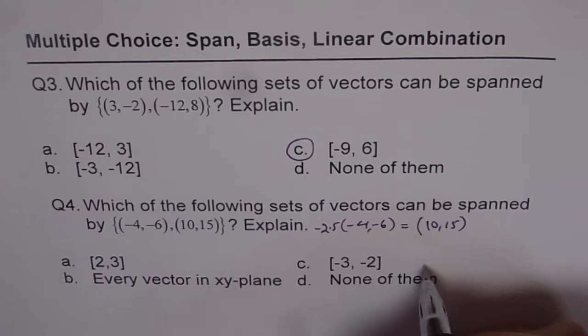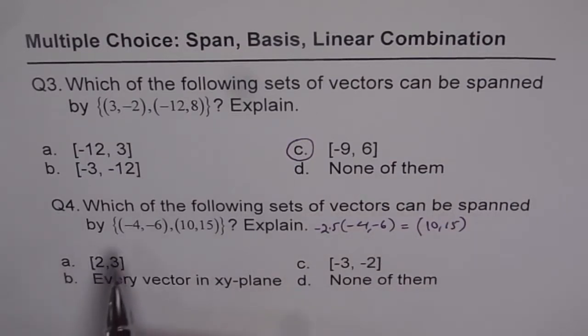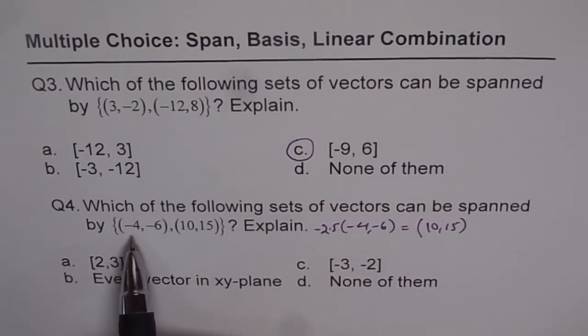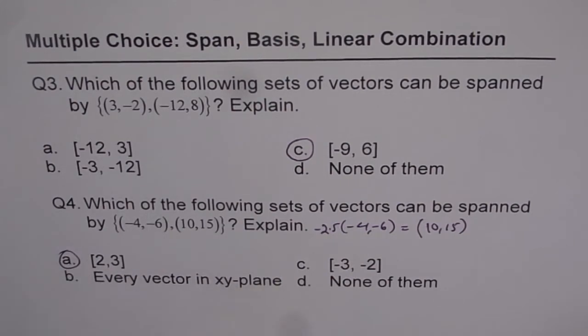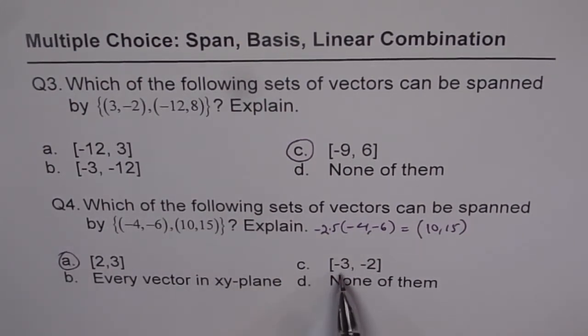Since they are scalar multiples, they can also span collinear vectors. Same concept. So the collinear vector will be, if I divide by -2, I get the first one, correct? So that for sure can be spanned. How about the next one? No, it can't be. So that is the choice.